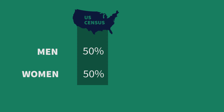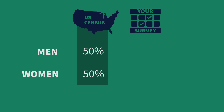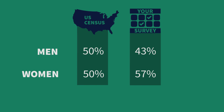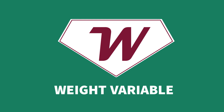However, we see that our completed survey interviews are composed of 57% women and 43% men. This means our sample parameter does not match our population parameter. We have oversampling of women and undersampling of men. To correct this imbalance, we generate a new variable: a weight variable.